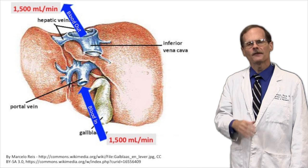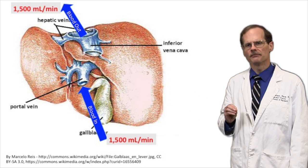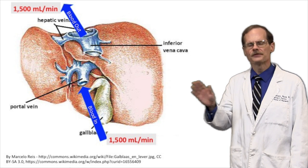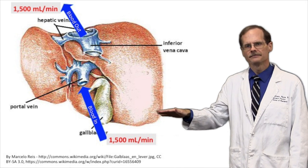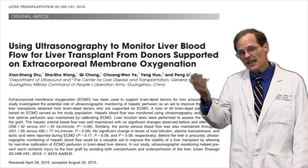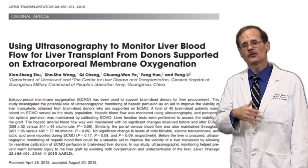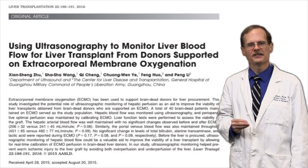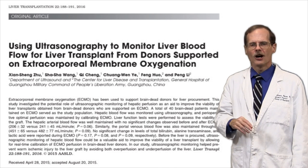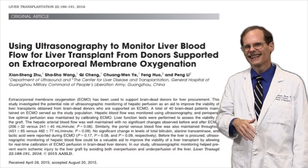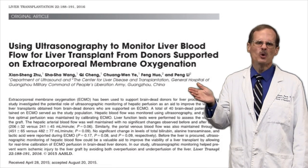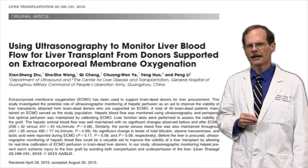Normally about 1500 milliliters of blood flows through the liver every minute. Unfortunately, there isn't an easy way to directly measure hepatic blood flow. There are techniques involving tracer substances injected into the blood or ultrasound scans, but they're used more for research than for day-to-day practice.